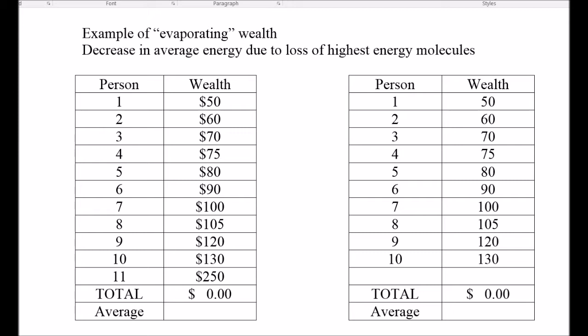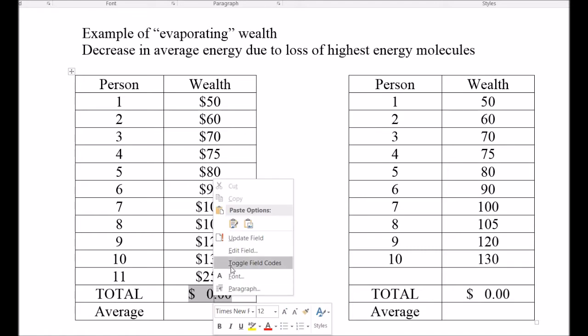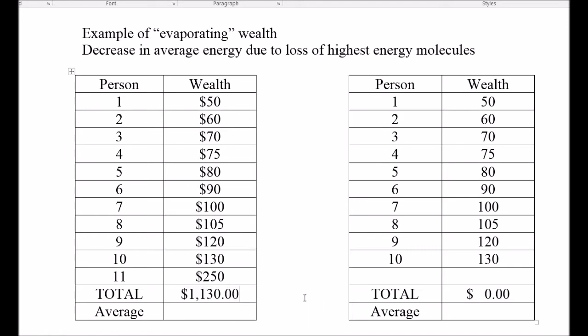Here's a model for the loss of average energy due to evaporation. So here I've got a population of humans with some money. And I can total their money. I have $1130 total wealth divided by 11 people. So the average will just be $1130 divided by 11, which gives me an average of $103 per person.